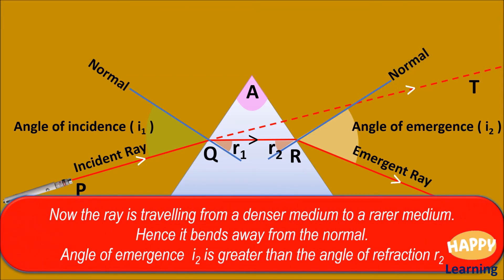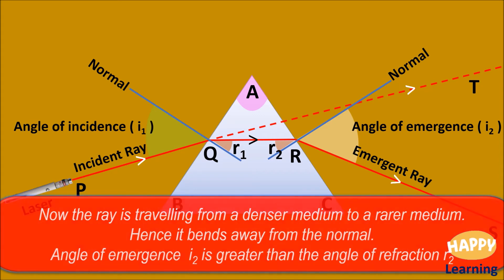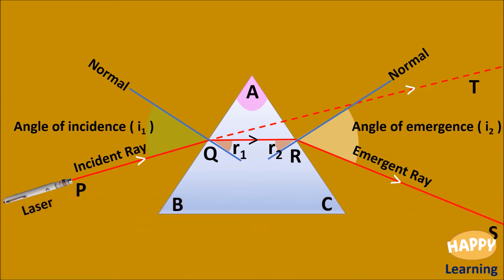Now the ray is travelling from a denser medium to a rarer medium, hence it bends away from the normal. The angle of emergence I2 is greater than the angle of refraction R2.